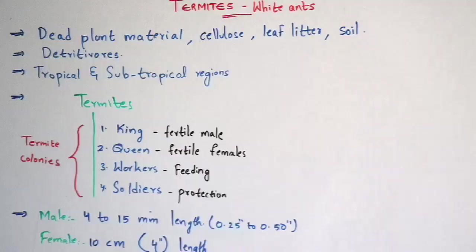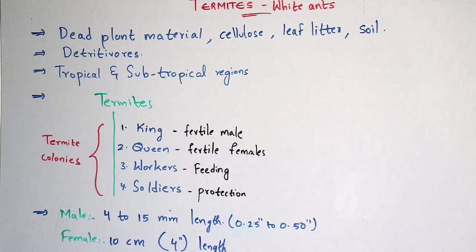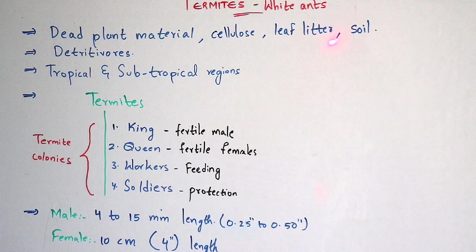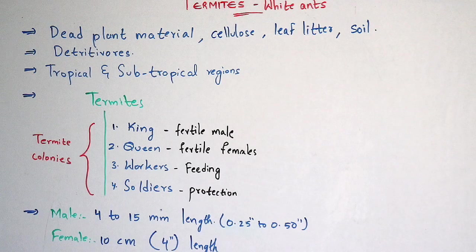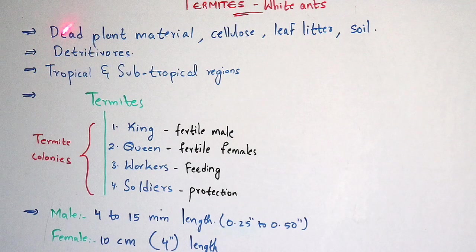Now let us see the introduction on termites. Normally these termites feed on dead plant material, cellulose, leaf litter and on soil. So they are called detritivores. Why are they known as detritivores? Because detritivores are insects which feed upon dead decaying material, that is, material which consists of nitrogenous waste.